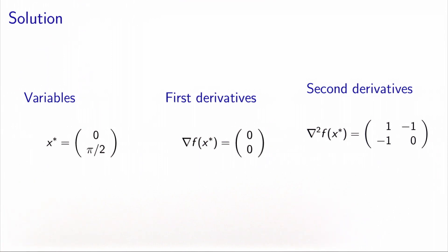So we need to look at the second derivatives as well. So we calculate the second derivatives of this function, and we get this matrix, this two-by-two matrix: 1, minus 1, minus 1, 0. And now let's calculate the eigenvalues of this matrix.